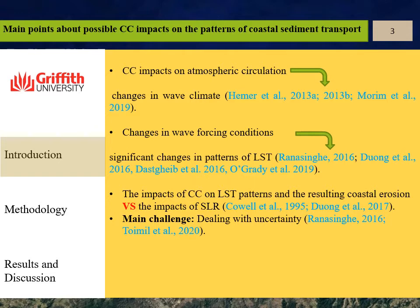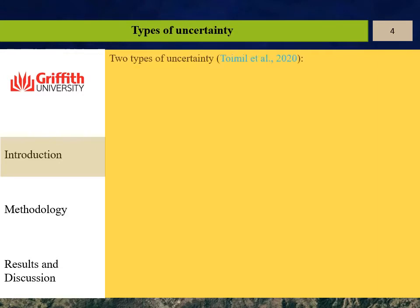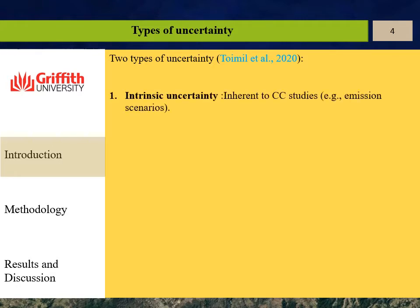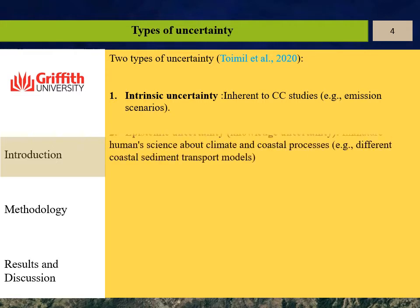But the main challenge to project future patterns of longshore sediment transport is how to deal with uncertainty arising from different sources. Two types of uncertainty can be identified in coastal climate change studies. In intrinsic uncertainty, which is inherent to climate change studies, we always have this type of uncertainty in projections — for example, we have different emission scenarios.